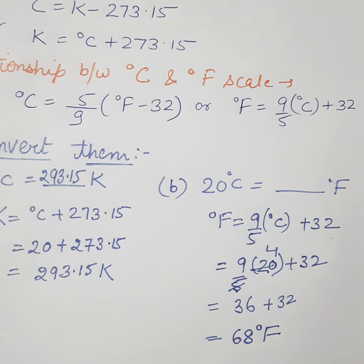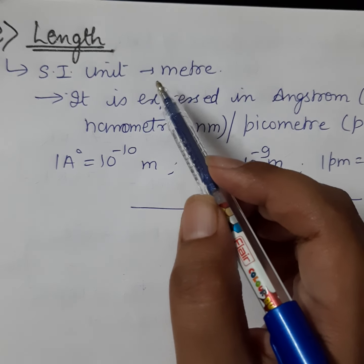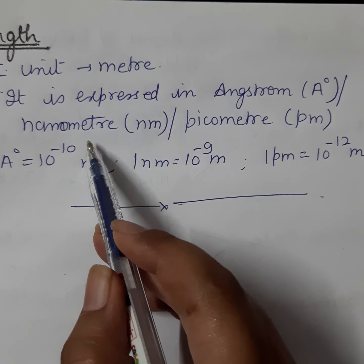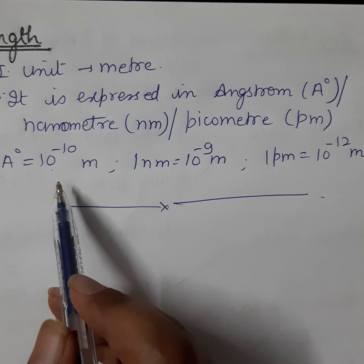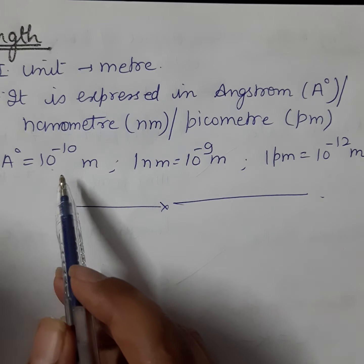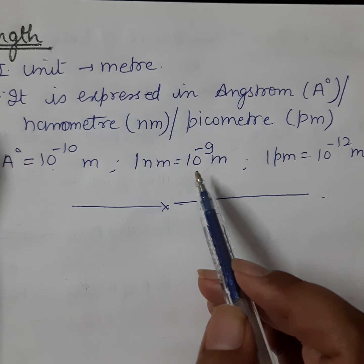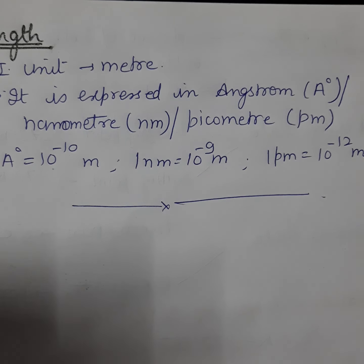The last important physical quantity is length. Its SI unit is meter. At the atomic scale, length is expressed in angstrom, nanometer, or picometer. 1 angstrom equals 10⁻¹⁰ meter. 1 nanometer equals 10⁻⁹ meter. 1 picometer equals 10⁻¹² meter. Once converted to meters, you can further convert to centimeters.